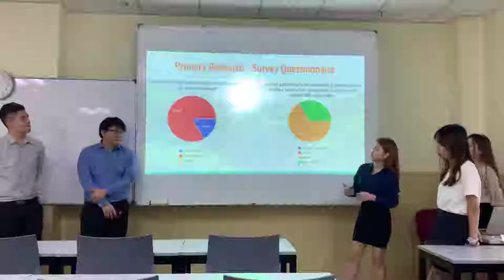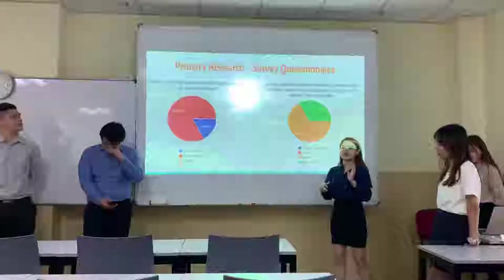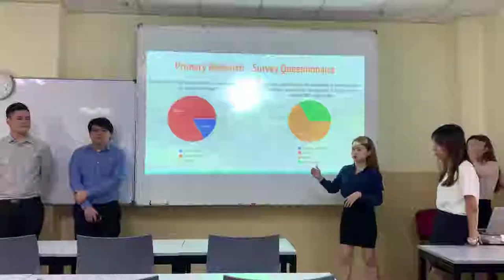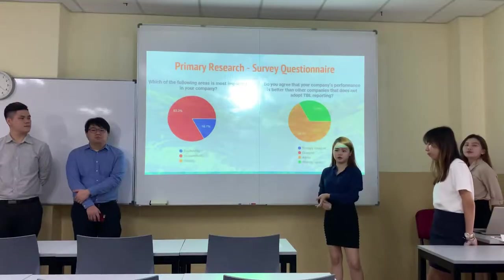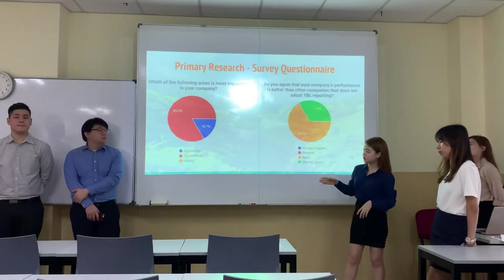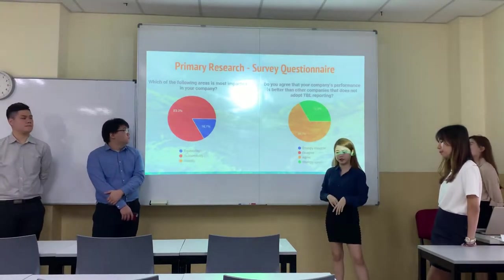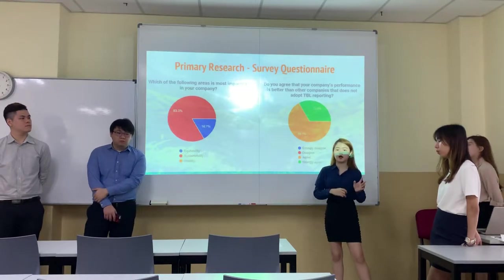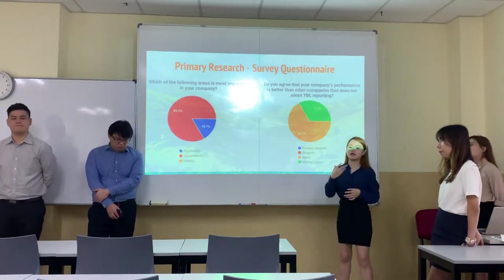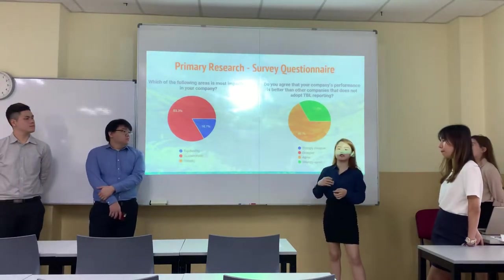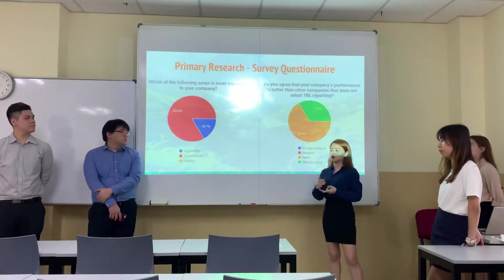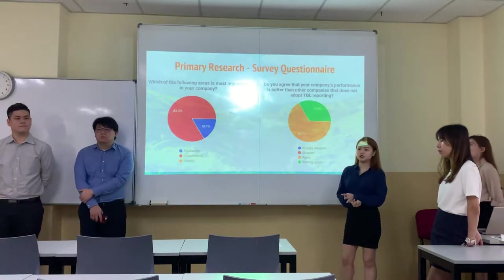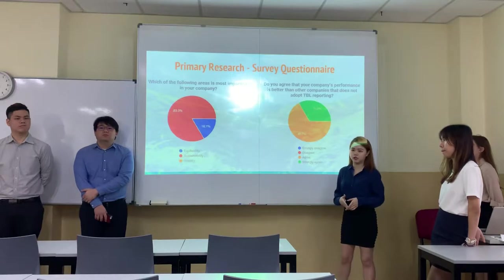When employees implement the Triple Bottom Line into the organization, it can increase intentions in the social, economic, and environmental aspects. Furthermore, equitability shows the impact on social factors. When individuals come into the working environment, they seek jobs they are more favorable to, based on their own concerns and perspectives. Therefore, when the company has policies of equal gender, no child workforce, compensation for overtime workers, and medical insurance, it can attract more potential workers to the organization.